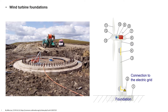The generator in a wind turbine produces alternating current electricity. Some turbines drive an AC/DC converter which converts the alternating current to direct current with a rectifier and then back to alternating current using an inverter, in order to match the frequency and phase of the grid. However, the most common method in large modern turbines is to use a doubly-fed induction generator generally connected to the electricity grid.